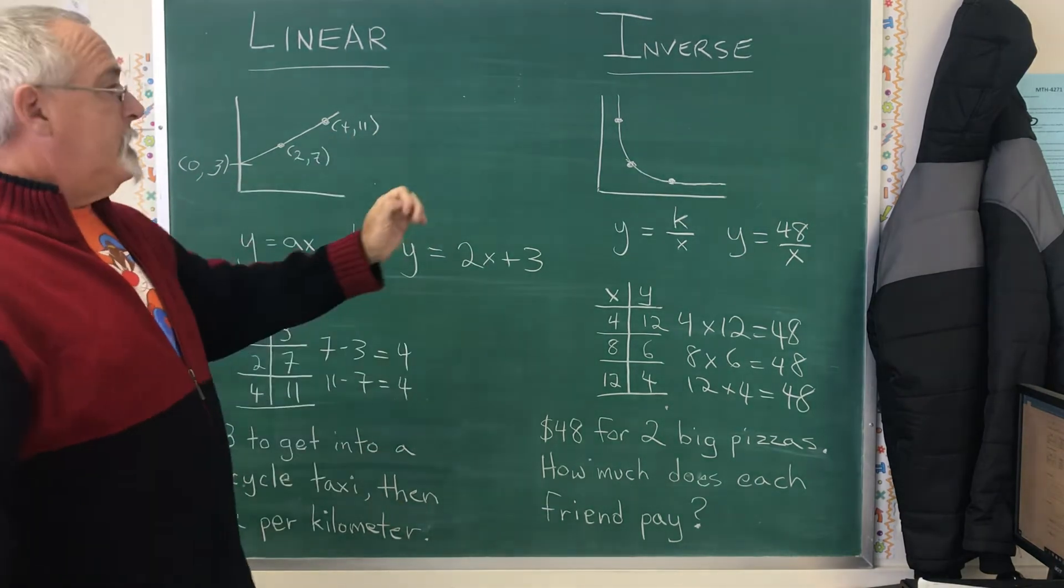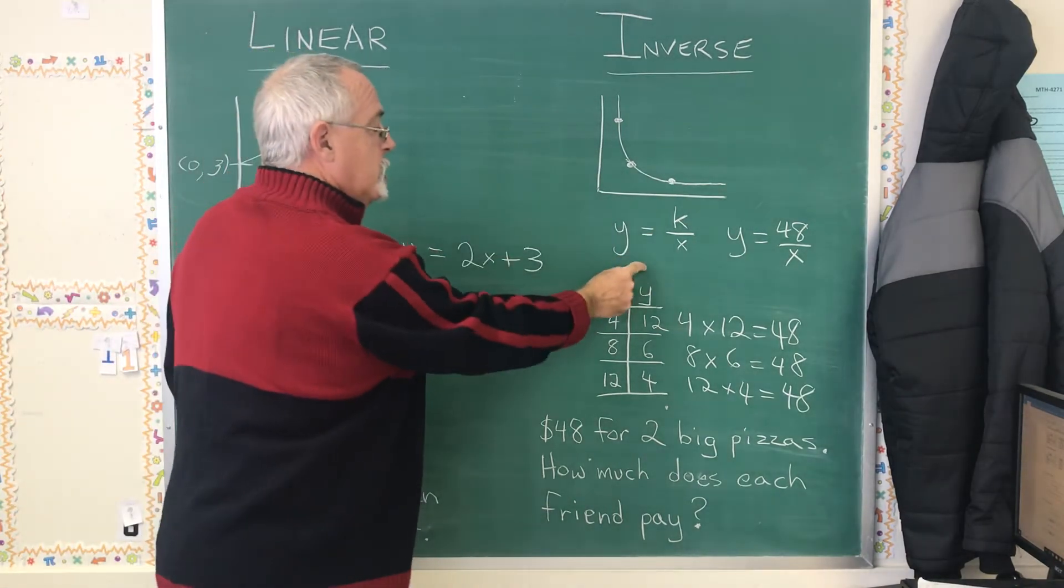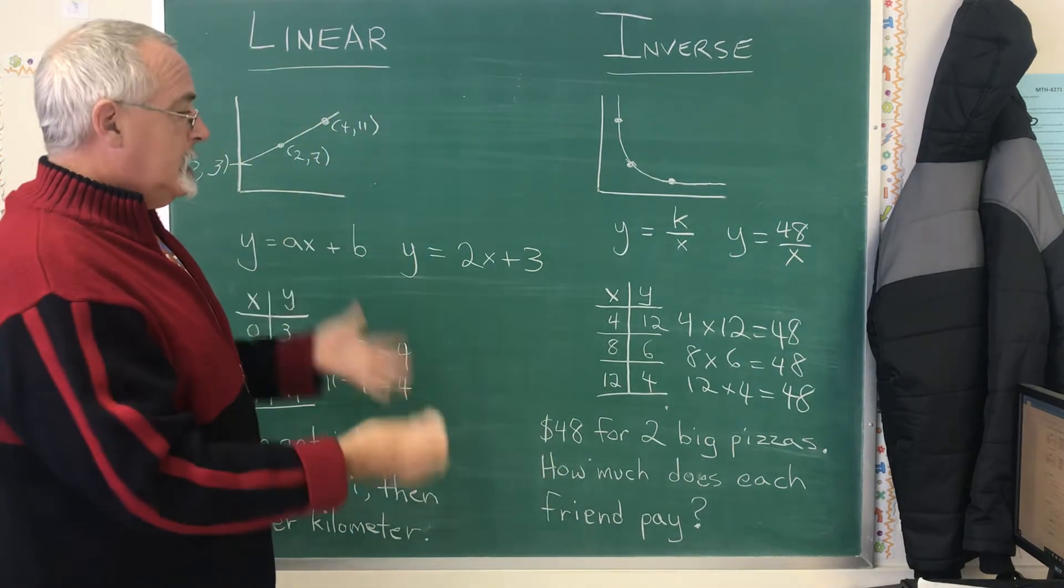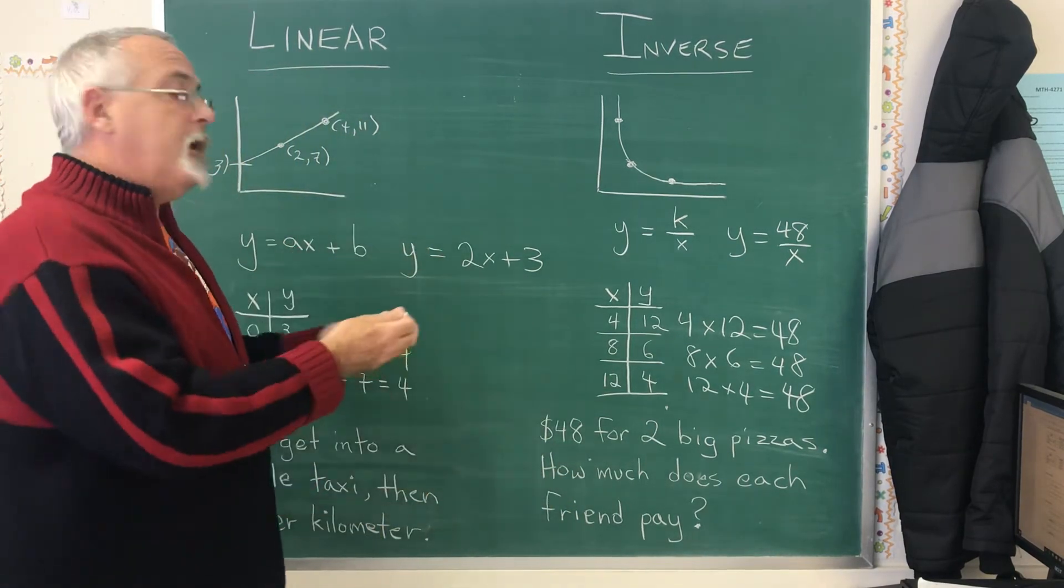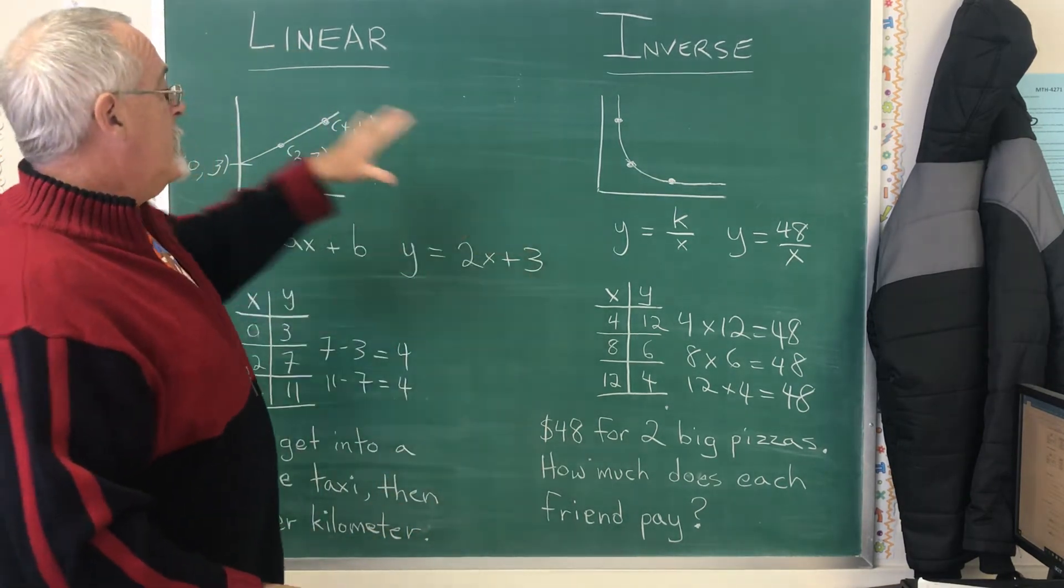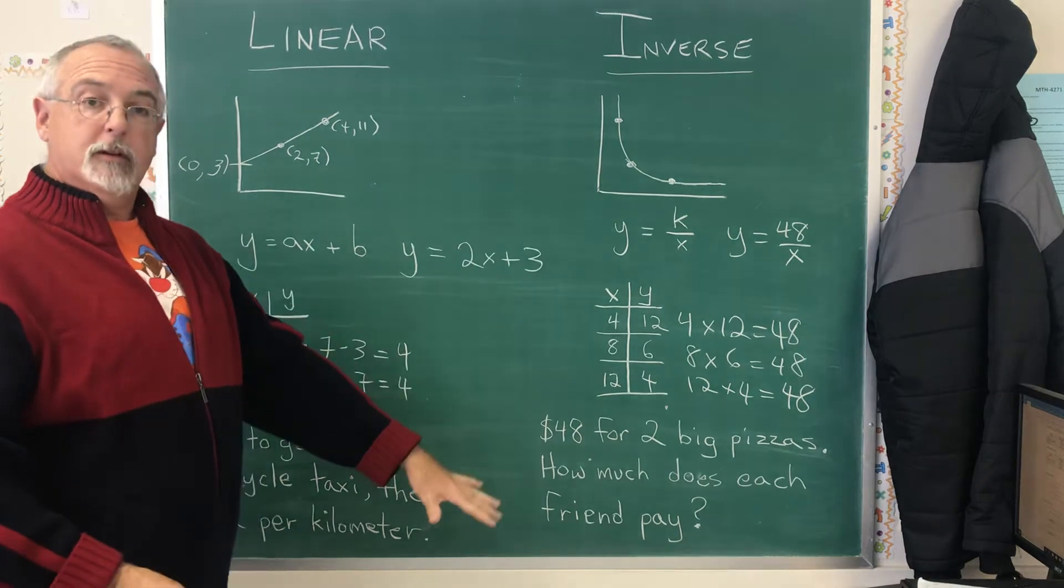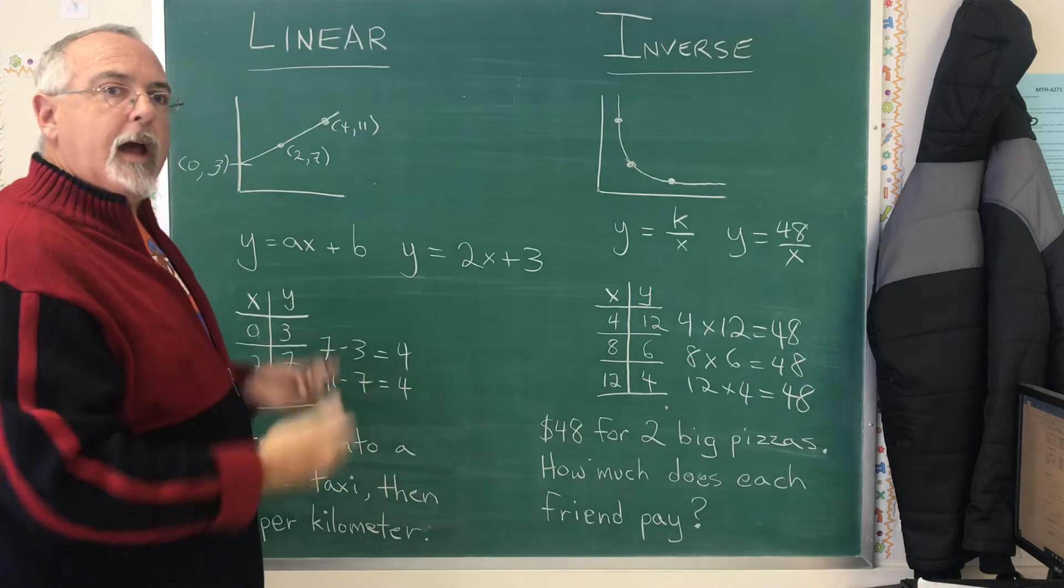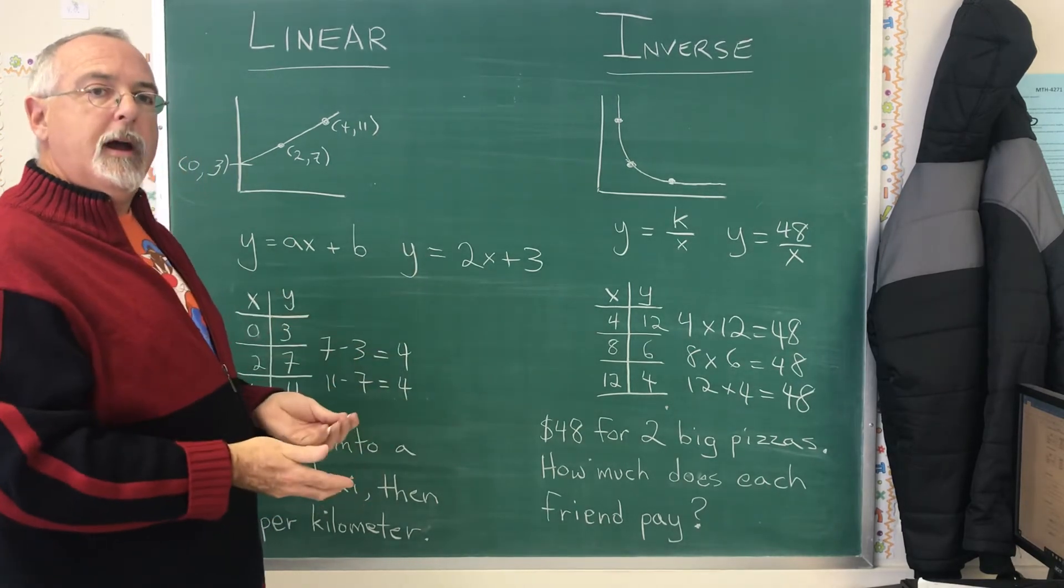All of these things relate to each other. The graph, the equation, the table of values, and the text situation. In an exam question, they will give you some of that and you need to be able to figure out the rest. This is an example of doing that for either a linear or an inverse situation. But it also is really focused on, when you're given your information, how do you know which situation you have?